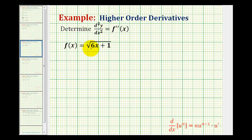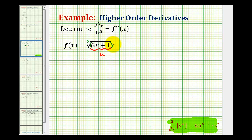Our inner function of 6x plus 1 is going to be equal to u. So we'll be applying the extended power rule, which includes the chain rule, to find the first derivative. When we have a square root, the index is 2, and we can think of this as the quantity 6x plus 1 to the first, so we can rewrite this function as u to the power of one-half. And so if we let u equal 6x plus 1, we know u prime is equal to 6.